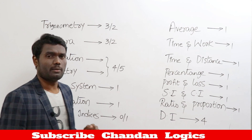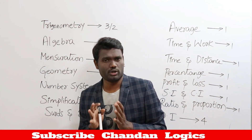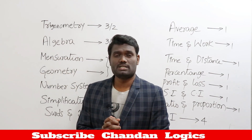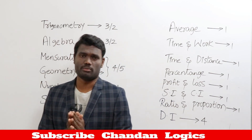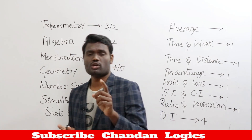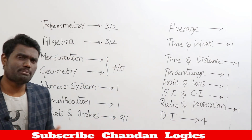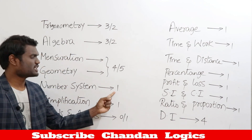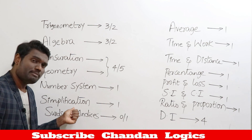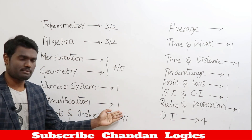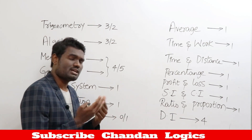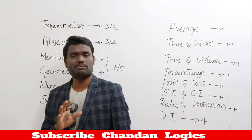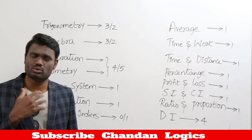Mensuration and geometry combined together is a really important topic. If you're writing the mains examination you can expect 15 to 25 questions from mensuration and geometry. For prelims, you can expect four to five questions from mensuration and geometry. From number system you can expect one question, from simplification one question, and from surds and indices sometimes they ask a question and sometimes they don't.